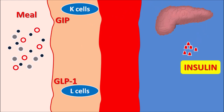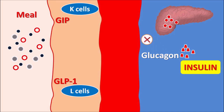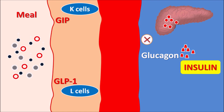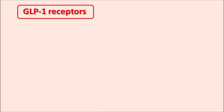Incretin hormones pass through the systemic circulation to the pancreas, stimulating insulin release and inhibiting glucagon release via GLP-1. This increases glucose uptake, decreases gluconeogenesis, reduces hepatic glucose production, and delays gastric emptying. The delayed gastric emptying reduces appetite and controls glucose levels by slowing food absorption.